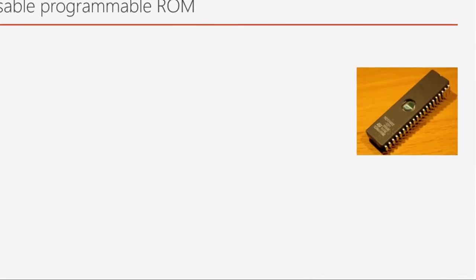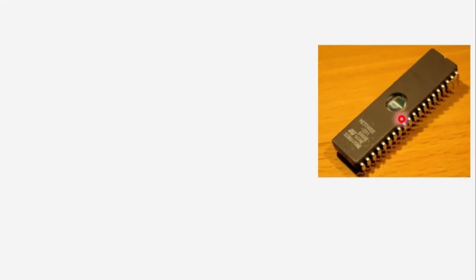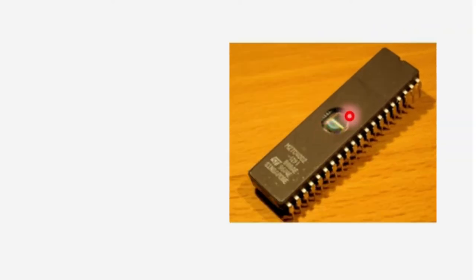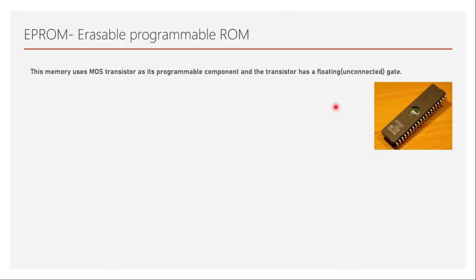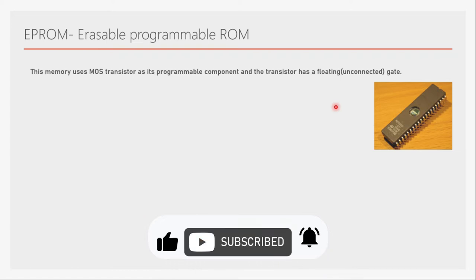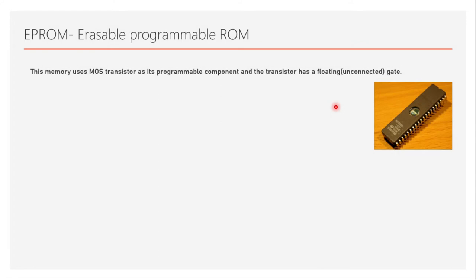Here is a picture of erasable programmable ROM. You see there is a window over here, and this is basically used for erasing purpose. Due to this it is also called as windowed ROM, because there is a window through which the erasing operation is done. This memory uses a MOS transistor as its programmable component, and the MOS transistor has a floating gate — floating in the sense an unconnected gate. Unlike PROM which uses fuses as its programmable component, this uses a MOS transistor which has a floating gate.